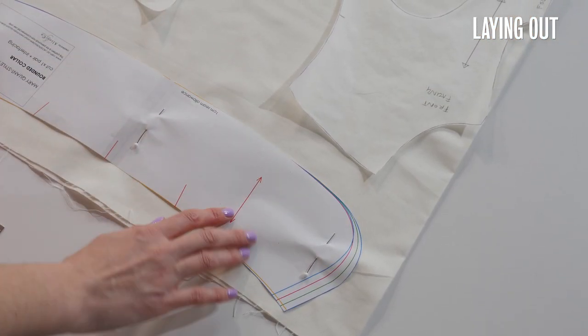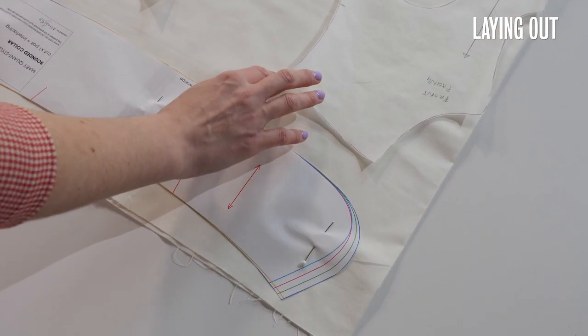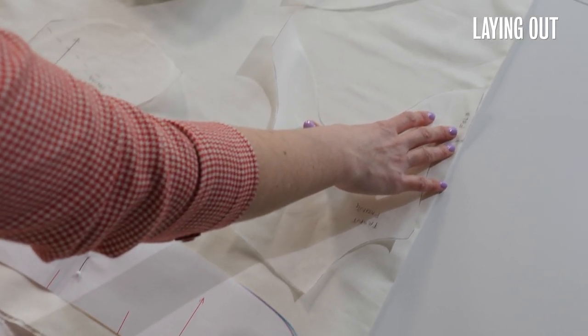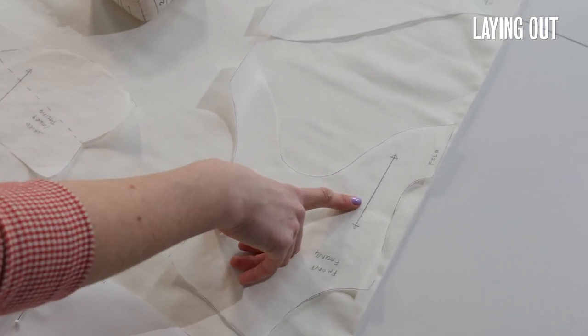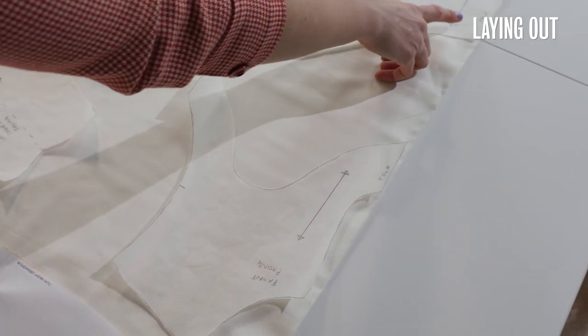So just as with my main pattern pieces I've also marked on my traced off facings the grain line and also where things need to be cut on the fold.